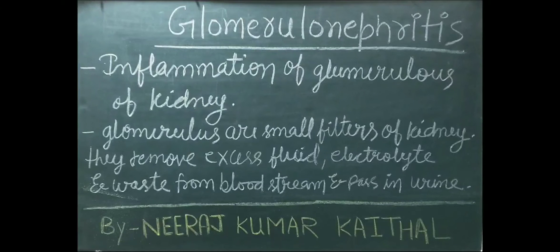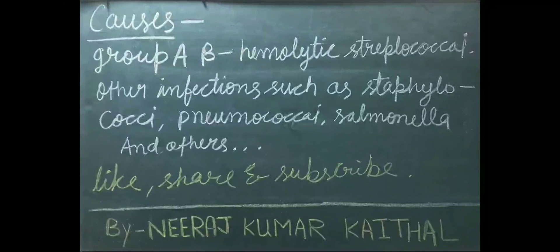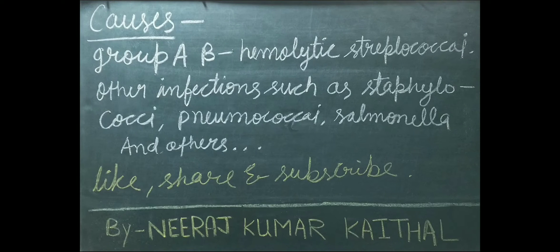Glomerulonephritis is an inflammation of the glomerulus of the kidney. Glomeruli are small filters of the kidney; they remove excess fluid, electrolytes, and waste from the bloodstream and pus in urine. Some important causes of glomerulonephritis are Group A beta-hemolytic streptococci.